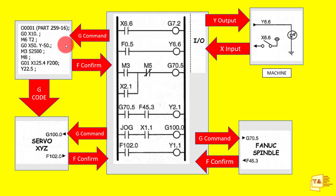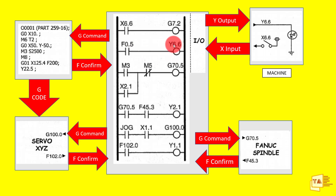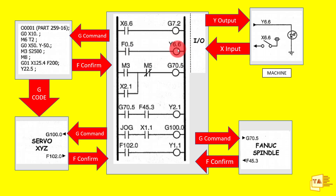CNC is getting information from PMC and starting the cycle. It then gives an F confirmation signal — you have requested to start the cycle and CNC has started it. CNC gives the confirmation through the F signal. Here we are getting F 0.5, which confirms the cycle is started. This F 0.5 signal energizes Y 6.6, so in your machine you can use this Y 6.6 output to indicate to the operator whether the cycle has started.